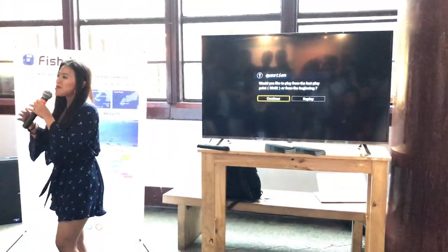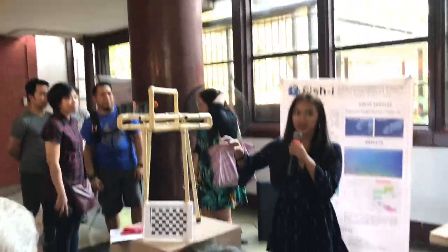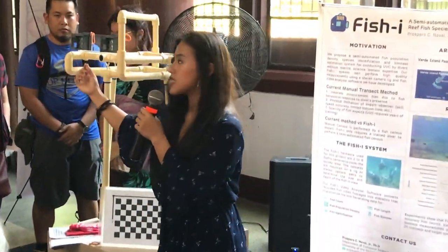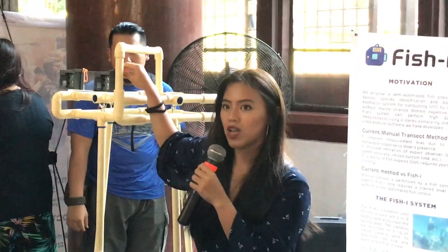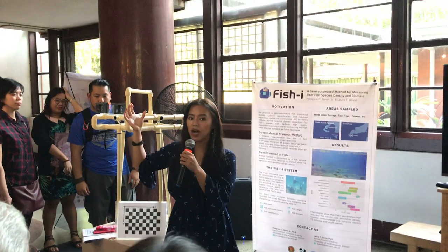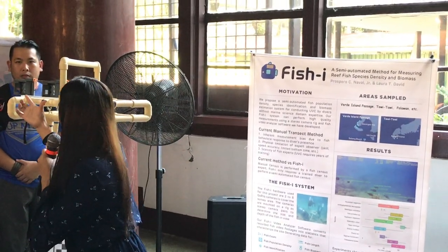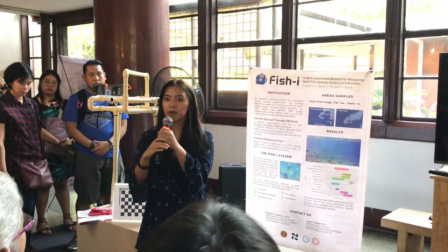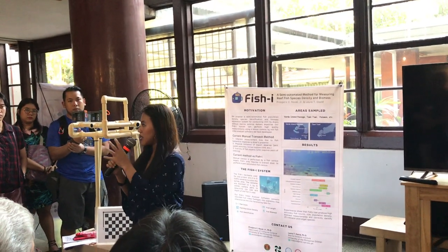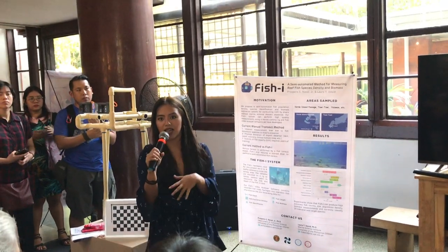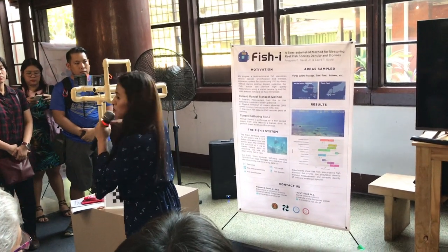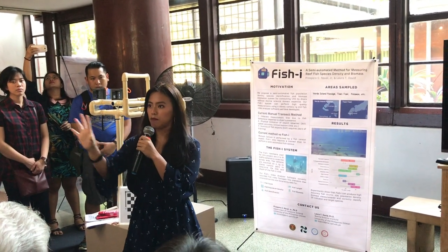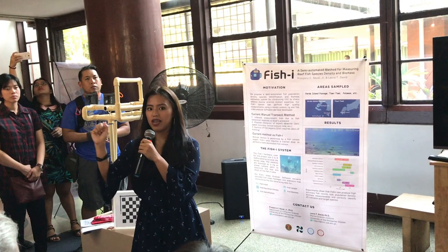Paano po namin ginagawa ang collection ng data? Una po, nag-dedive po kami sa isang area. Nag-attach po kami ng chrome cameras. Ito po yung latest 3D printed camera case para hindi po maalaw yung camera. Ang dahilan kung bakit dalawa po ang cameras dito ay para po ma-estimate yung depth ng subject — kung gaano po siya naglayo — para rin po ma-estimate namin yung size niya. And since meron ka na pong datos nung size, ma-estimate natin yung biomass. Pwede po nga i-explain pa further yung triangulation nito, pero ultimately, stereo vision ang ginagamit para ma-estimate kung gaano kalayo yung object from the camera.